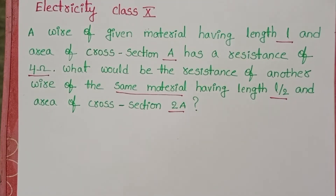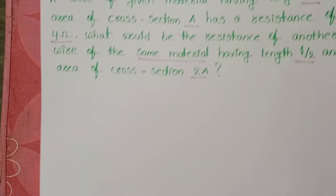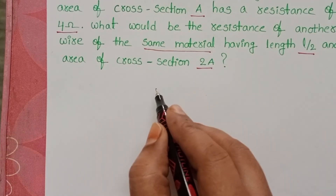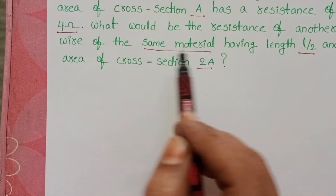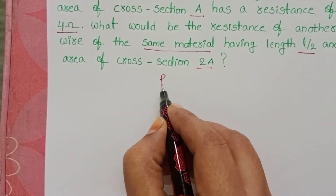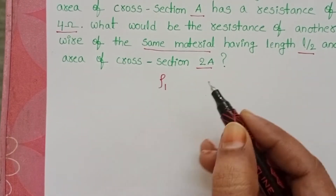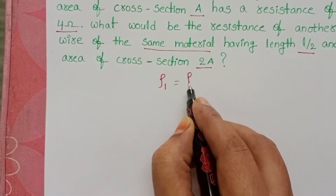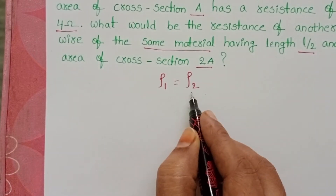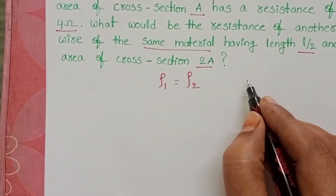In this question, there are two wires, but both wires are made with the same material. So the specific resistance or resistivity of these two materials is the same: ρ₁ equals ρ₂.